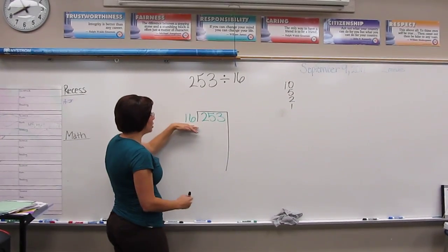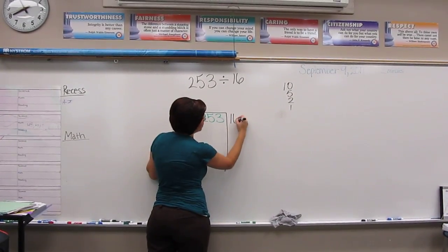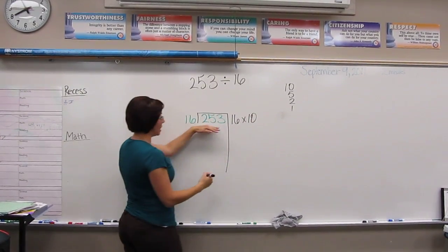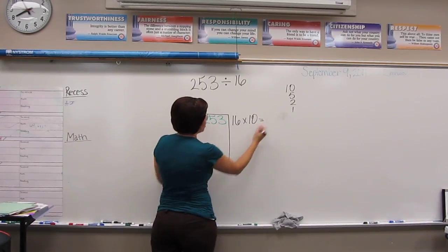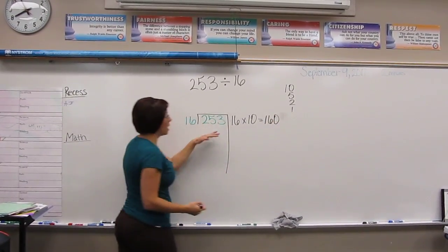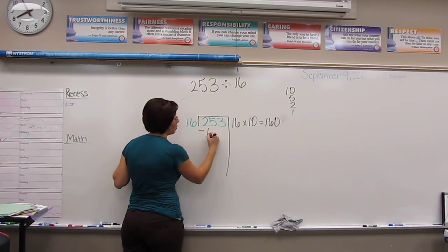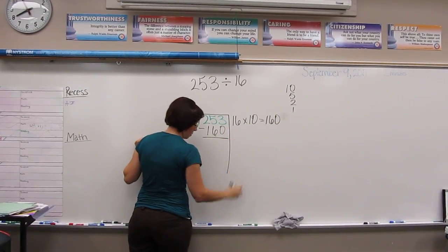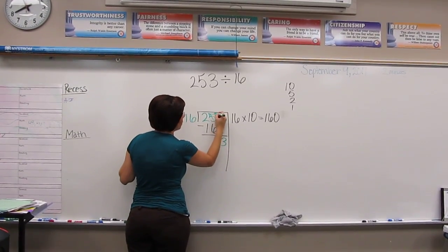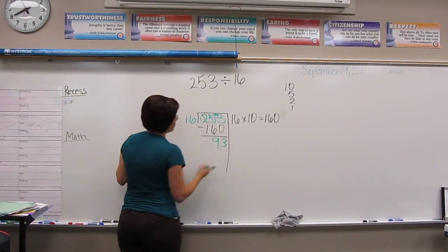My first step is to take my divisor and multiply it by 10 to see if I can subtract that from my dividend. 16 times 10 is 160, and so I subtract that out from here, 93.